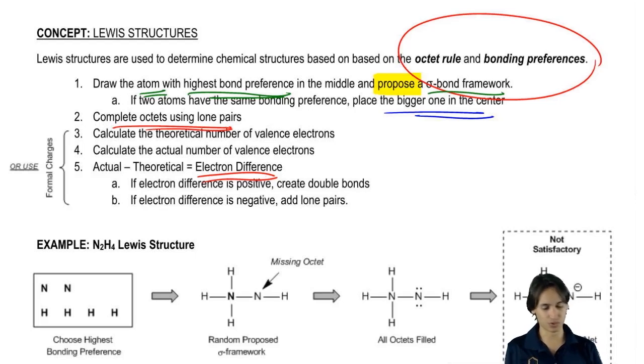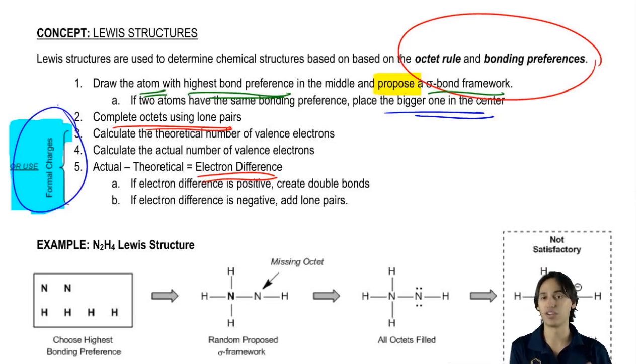So that's the rules, but what I want to tell you is that steps three through five, now that we know orgo and now that we know what bonding preference is and formal charges, you could actually just use formal charges and bonding preferences to figure all that out. So we're not going to have to keep doing this math anymore.